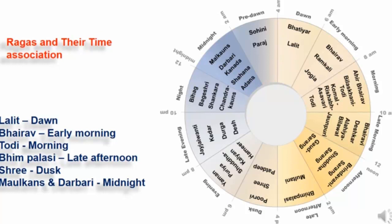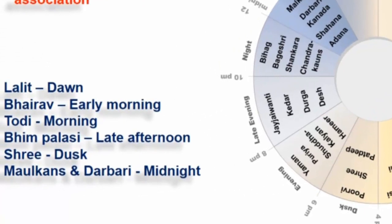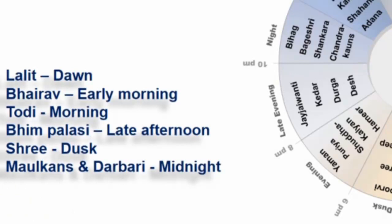Thodi raga is sung in the morning, between 8 a.m. and 10 a.m. Bimpalasi is sung in late afternoon, between 2 p.m. and 4 p.m. A chart is also given — if you want, you can pause and watch it. Then Shri raga is sung at dusk. Similarly we have Malkans and Darbari, which are sung at midnight.